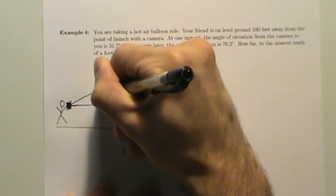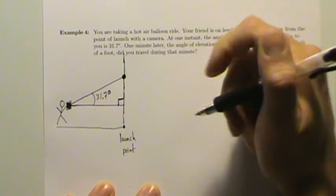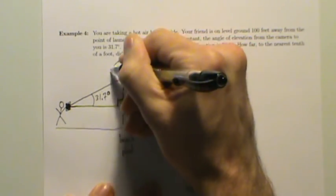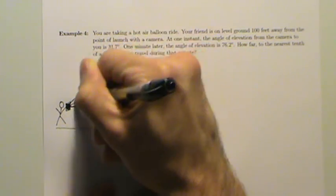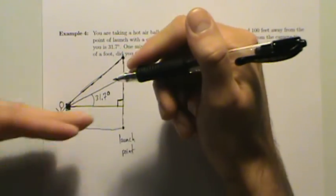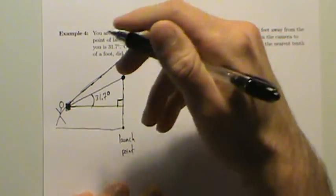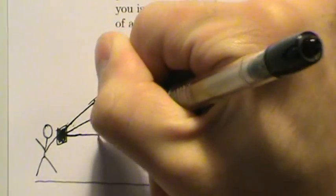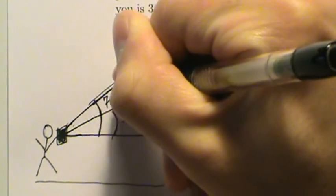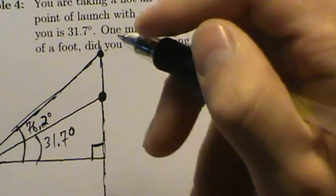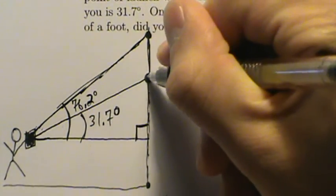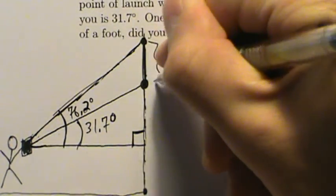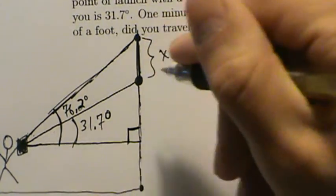At that first instant, the angle of elevation is 31.7 degrees. One minute later, the angle of elevation is 76.2 degrees — that entire angle measured from the horizontal is 76.2 degrees. We want to know how far we traveled in that minute, so we label that distance X.